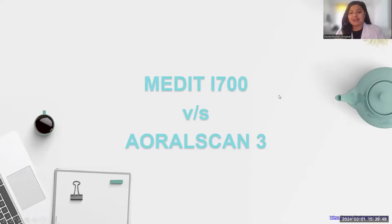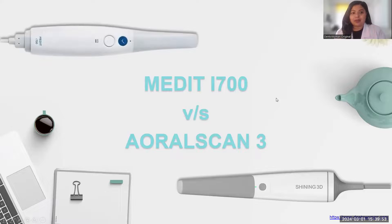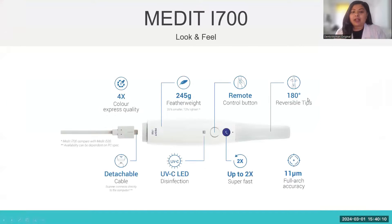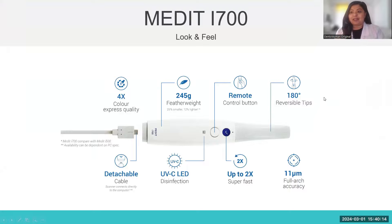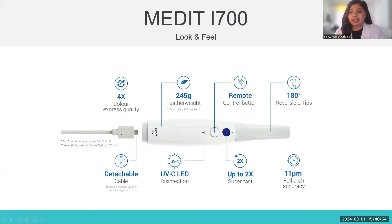Let's begin with the overview of Medit i700 versus Oral Scan 3. In terms of overall design and look, both scanners look similar and weigh almost the same, but there are a few small yet significant differences. Looking at the Medit i700 first — from my honest hands-on experience — it has a remote control button right below the scanning button, and while scanning I accidentally pressed it so many times. I really wish Medit had placed that button somewhere else.